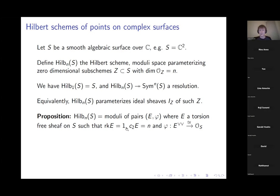The discrete invariants of E are fixed: its rank is one and its second Chern class is n. And φ is an isomorphism from E^{∨∨} to the structure sheaf of S. A torsion-free sheaf is one that has no torsion subsheaves — no sections supported on something of positive codimension. These things are almost like vector bundles.